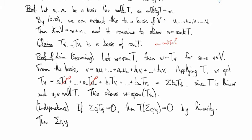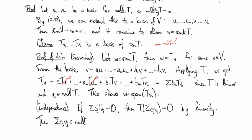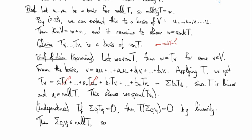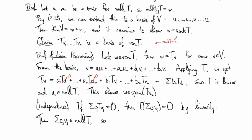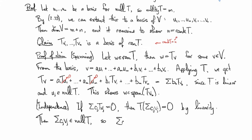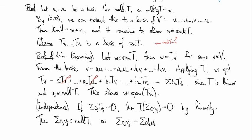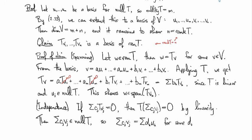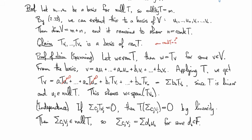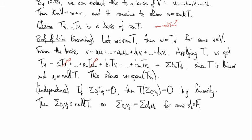Then the sum of cjvj is in the null space of T. So we know that we can express it in terms of the basis of the null space, which is the u's. So the sum of cjvj is going to be expressible as some linear combination of the u's for some choice of scalars dk. But now if I subtract the right side over to the left.